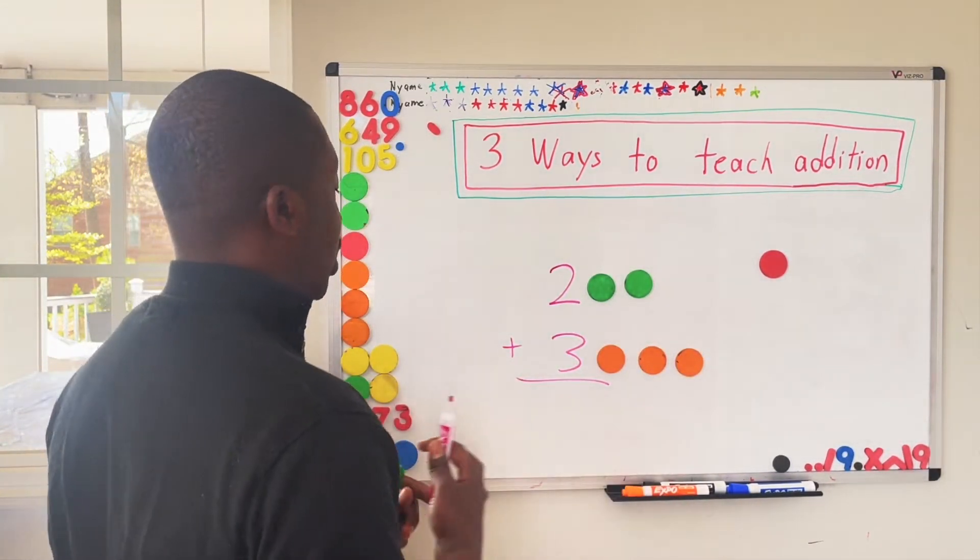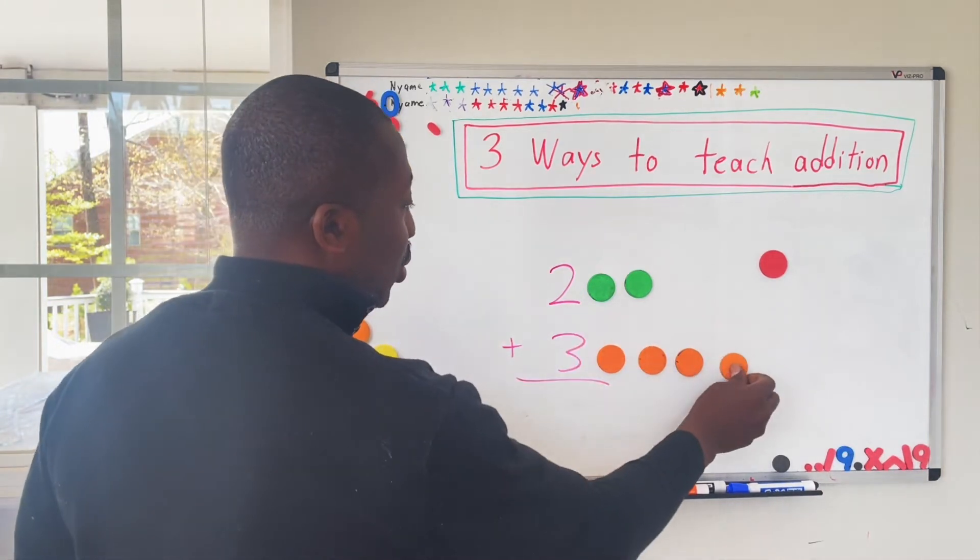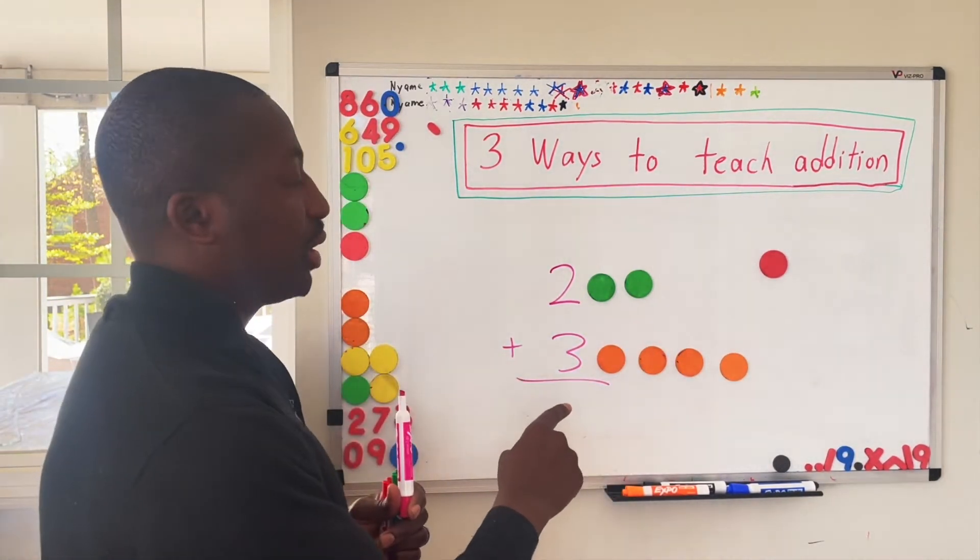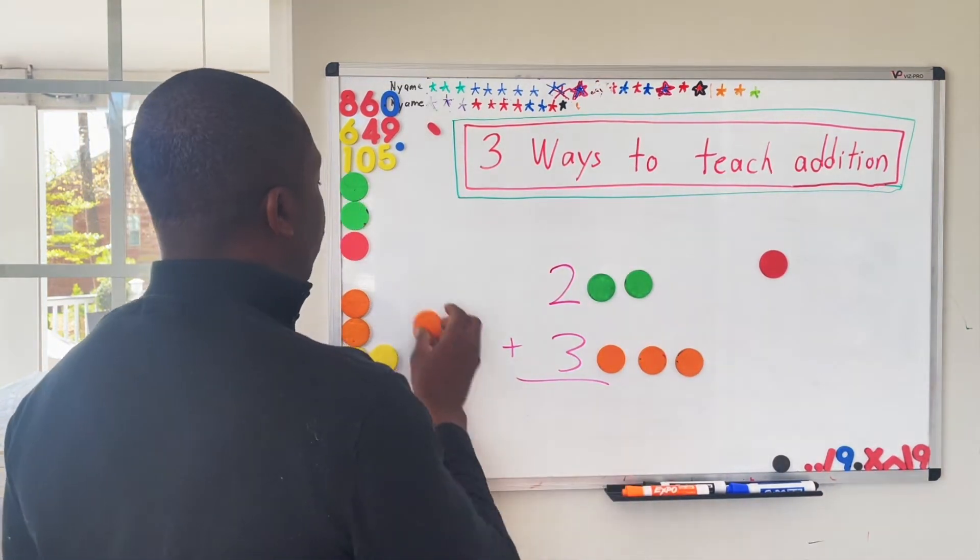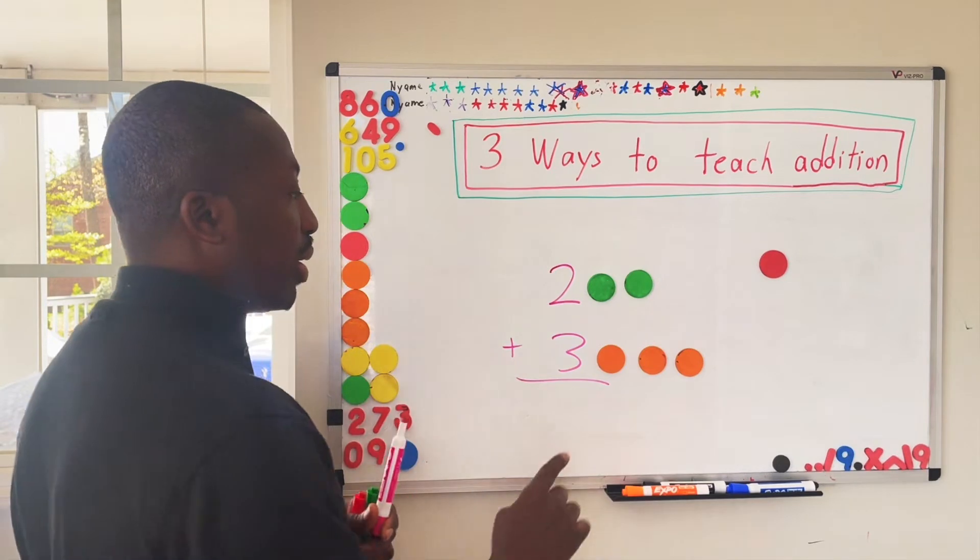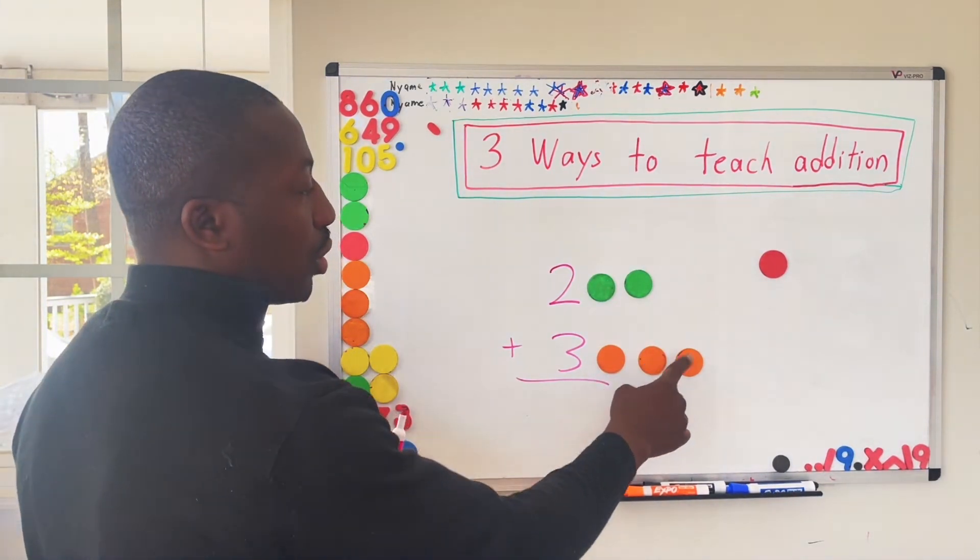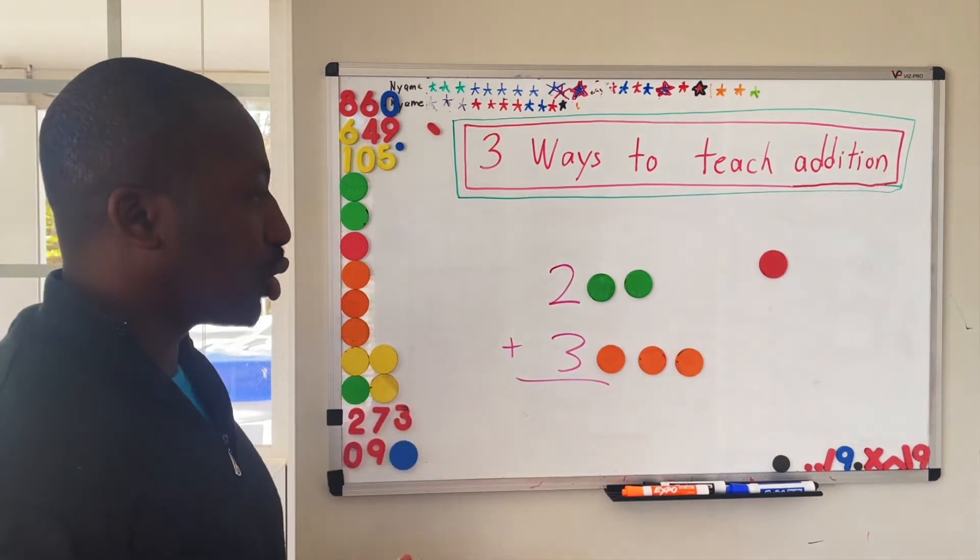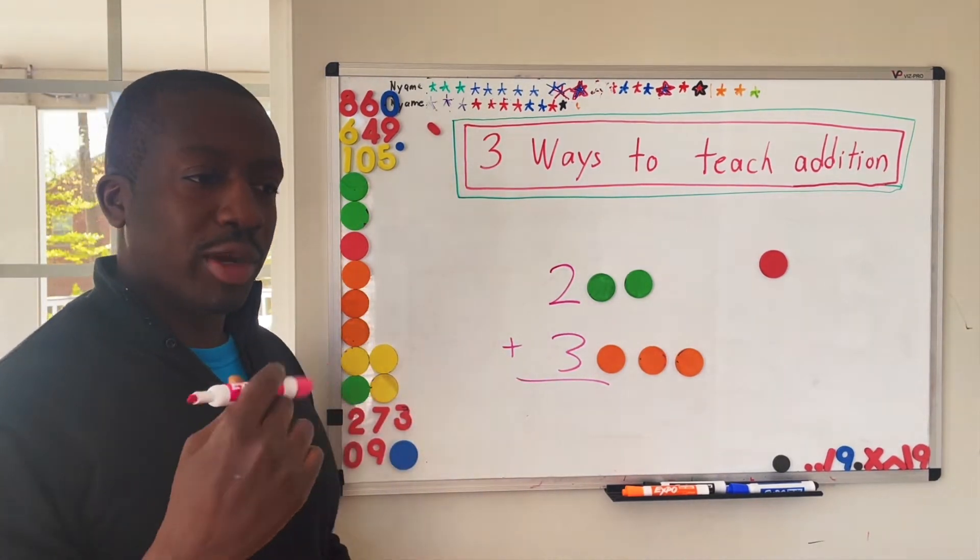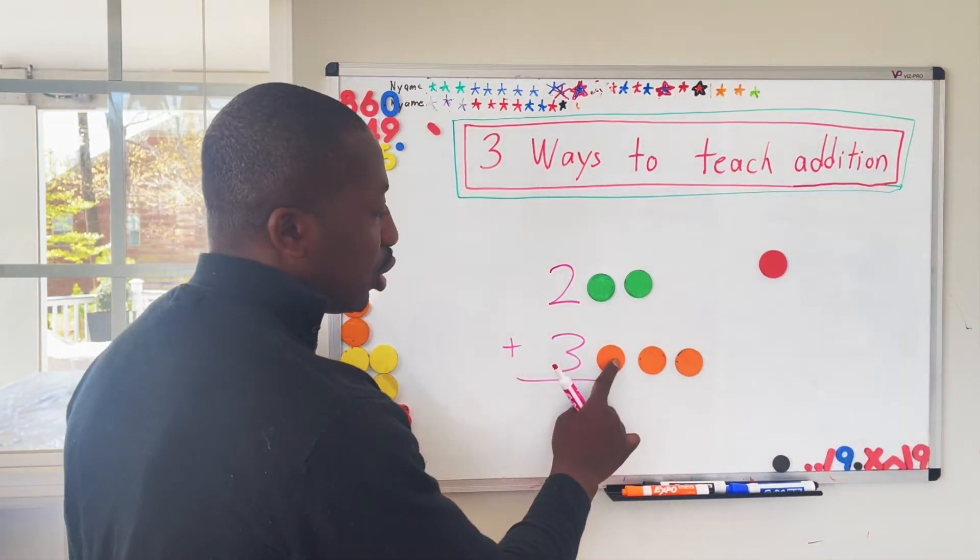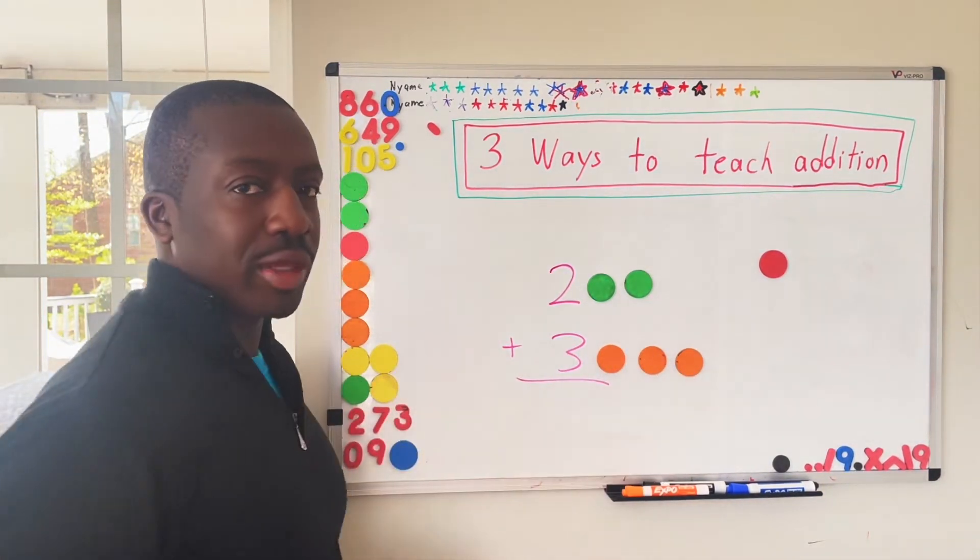If they count out of order, if they continue counting past three, then they're missing something there. Whenever I have children count, I always recommend they touch each object. So I recommend they go one, two, three. Eventually they'll be able to visually just look and say, it's just three objects. But whenever I find even my own kids starting to miss count, I always go back, touch each one, one, two, three.